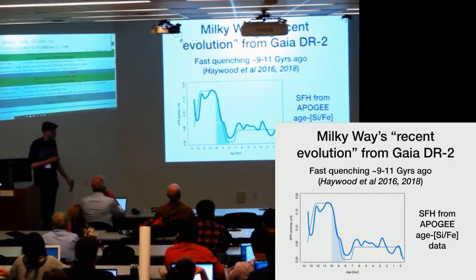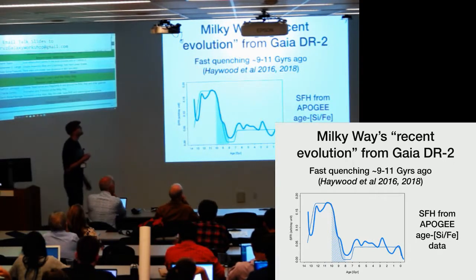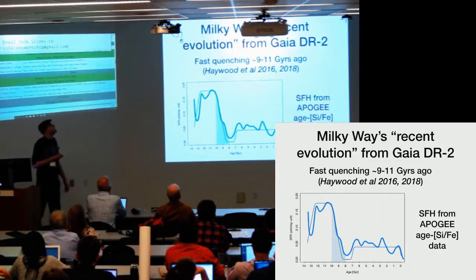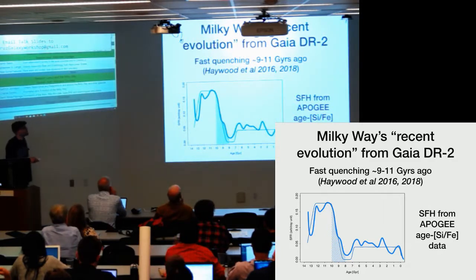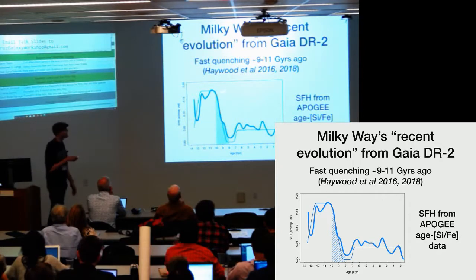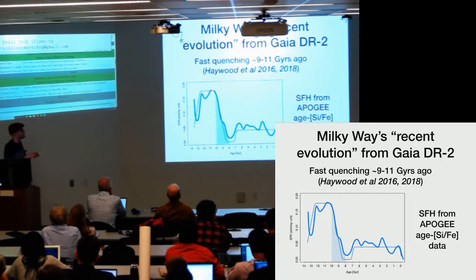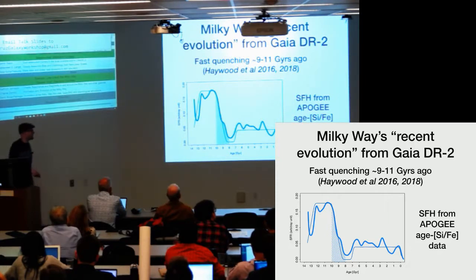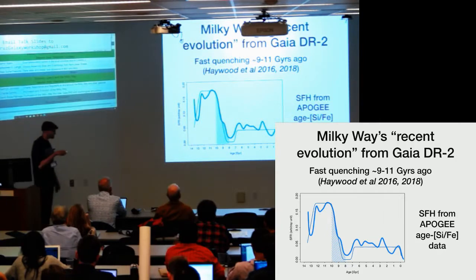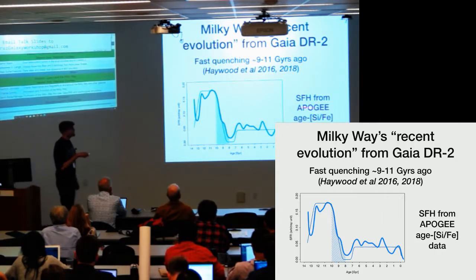Regarding results about the thin and thick disk: several years ago with the APOGEE data it was already presented that there was a quenching phase between eight and ten gigayears ago in the Milky Way — a very clear one. The galaxy almost died in its star formation, and this was seen with the APOGEE data.